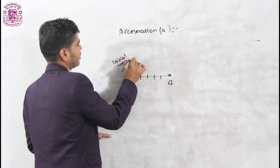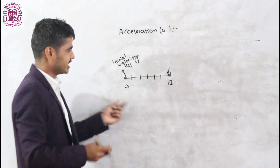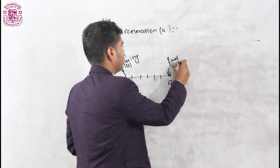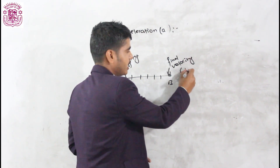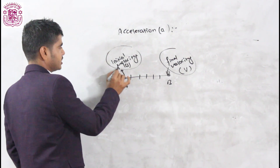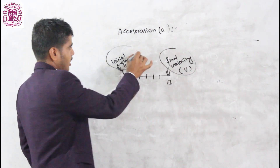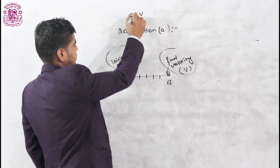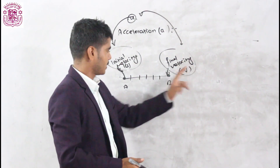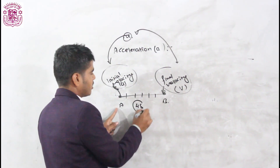Initial means starting. Initial velocity is represented by U. The velocity at the end is called final velocity, and it is represented by capital V. So we have two types of velocity: initial velocity U, which is the velocity at the starting phase, and final velocity V, which is the velocity at the end. If a body takes 4 seconds to travel from point A to B, that is the time taken.